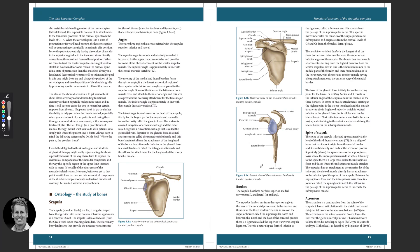Moving on to the borders — we've got three borders. This is the medial border, also known as the vertebral border, and this is where the rhomboids minor and major will attach. We've got the lateral border on this side, also known as the axillary border, where the teres minor attaches. There's also a small area just inferior to the glenoid fossa called the infraglenoid tubercle, where the triceps long head attaches. Where the two borders meet will be the inferior angle.